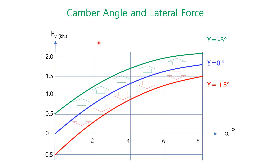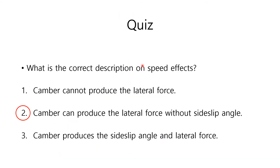This graph explains the camber effect on the lateral force. The blue color describes the lateral force along with the increment of side slip angle. When the camber angle is equal to zero, negative camber makes the lateral force linearly increase in proportion to the camber angle, shown in green. On the other hand, positive camber makes the lateral force linearly decrease in proportion to the camber angle, shown in red. The answer to the quiz is number 2: camber can produce the lateral force without side slip angle.